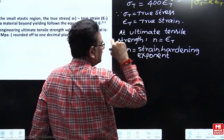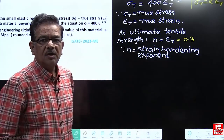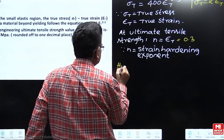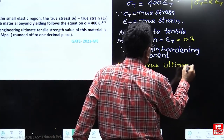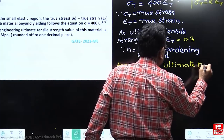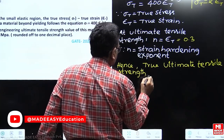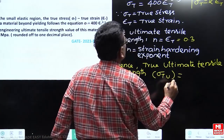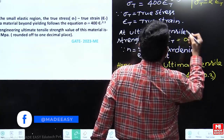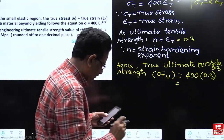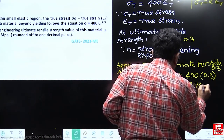At ultimate tensile strength, the necking condition becomes valid. Therefore epsilon_t = n = 0.3. Hence, the true ultimate tensile strength is given by: sigma_t_u = 400 × (0.3)^0.3. Substituting this, we get the true ultimate tensile strength as 278.74 megapascals.